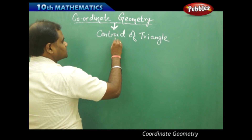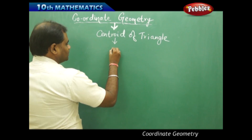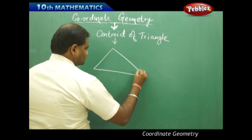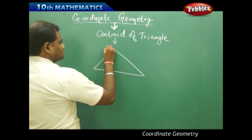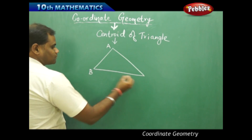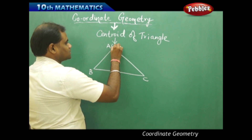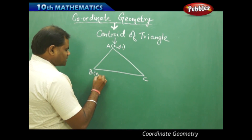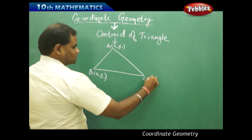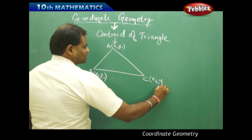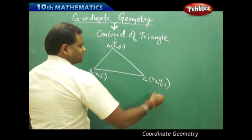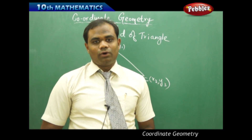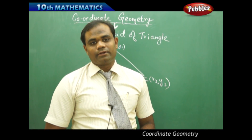If I take a triangle A, B, and C with coordinates A as (x1, y1), B as (x2, y2), and C as (x3, y3), then the centroid is the point of concurrence of all medians of the triangle.